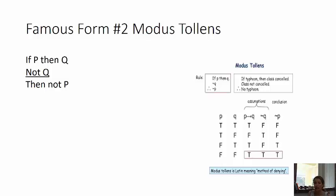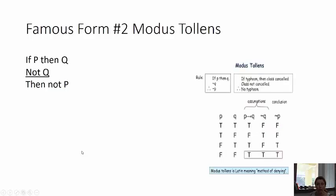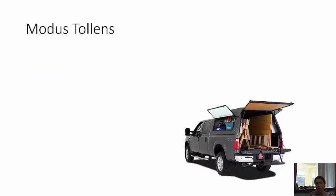Tender denying the antecedent. So this is modus tollens. It looks like this: if P then Q, not Q, then not P. So if you could jot that down or have your book open to refer to this as we look at these other examples.